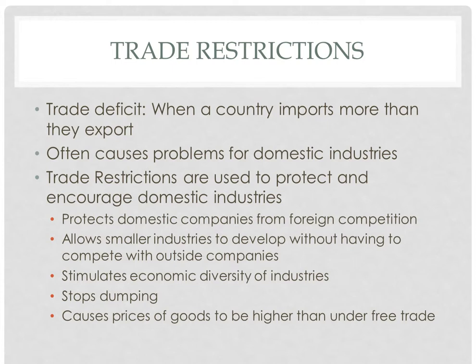Many countries around the world run what's called a trade deficit — basically they import more than they export. As a result, the industries in that country will suffer from competition from abroad. These countries will often implement trade restrictions to protect their own industries, allowing industries to thrive without threat from foreign competition. It also allows smaller industries to develop and grow so they can eventually compete on a global scale. Trade restrictions also encourage economic diversity and they stop dumping, or when foreign companies flood a market with underpriced goods to gain a foothold in that country's market.